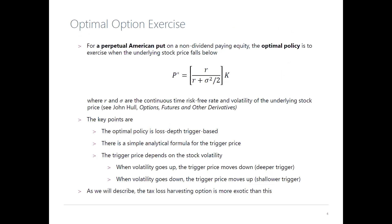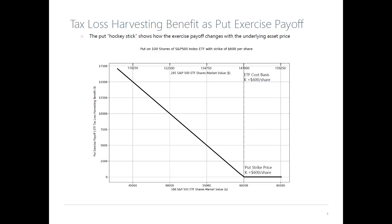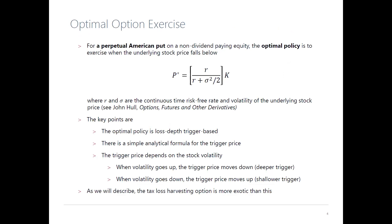With a standard financial put, if the price goes up, you just don't exercise the put, so you have zero. Same thing on the tax side — if the price goes up, you could sell the position and realize a gain, or you can defer the gain by just holding the position and not selling it. The IRS does not tax people on unrealized gains for U.S. investors.